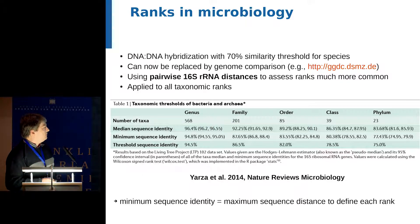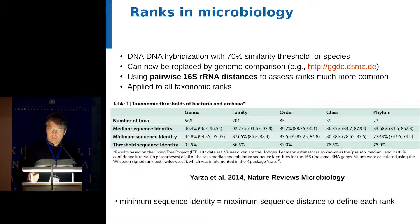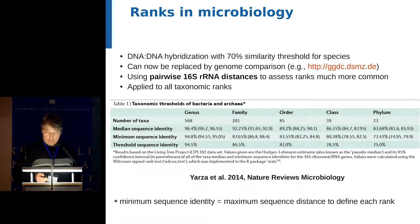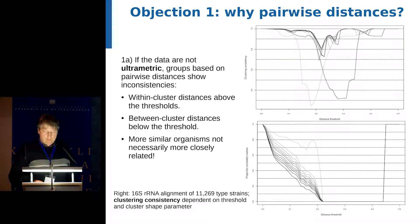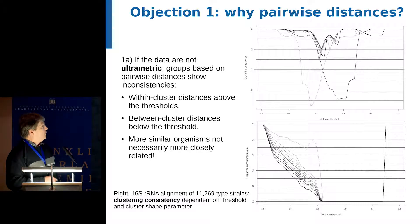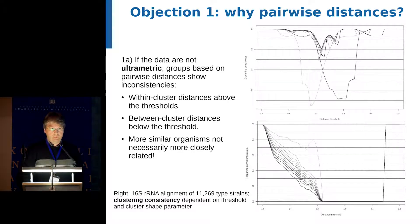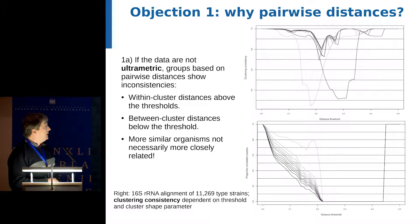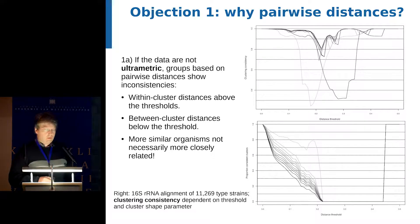This has the advantage that we can try to maximize taxonomic conservatism and can indeed quantitatively define ranks. Nevertheless, I have two objections. One refers to the use of pairwise distances. If the data are not ultrametric — that is, if sequences have not evolved on a molecular clock — pairwise distances do not necessarily lead to monophyletic groups. We can see inconsistencies in the clusters: within-cluster distances above the threshold and between-cluster distances below the threshold. This analysis was done for exactly the 16S rRNA dataset used in that paper.